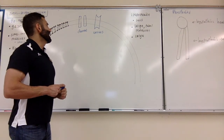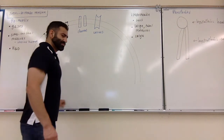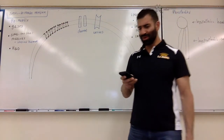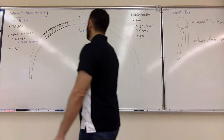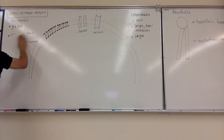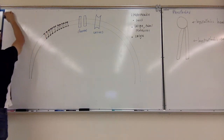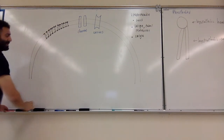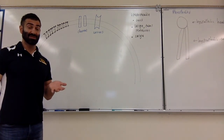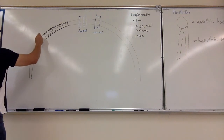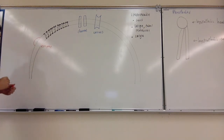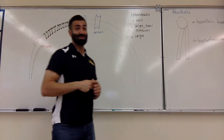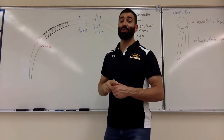Those are the two types of protein transporters. The next thing on the cell surface is enzymes - types of proteins on the cell surface that catalyze chemical reactions, meaning they allow chemical reactions to happen faster. We'll go over specific examples as the semester progresses.